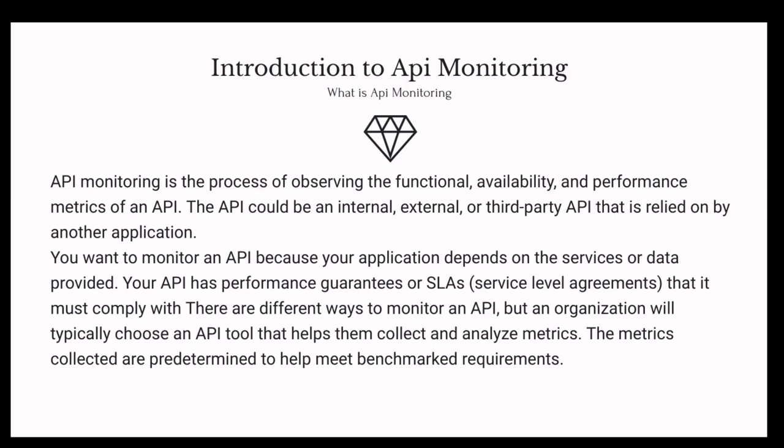API monitoring is the process of observing the functional availability and performance metrics of an API. In today's world, most applications are web-based or cloud-based, which are purely dependent on APIs — the backbone of most applications. APIs can be internal, external, or third-party. For example, weather forecast applications provide APIs which we can use in our own application to display weather data. Many companies provide such services, and these are treated as third-party APIs.